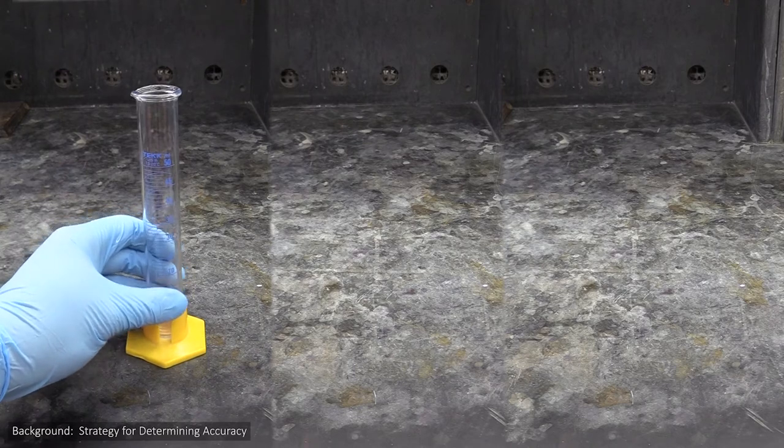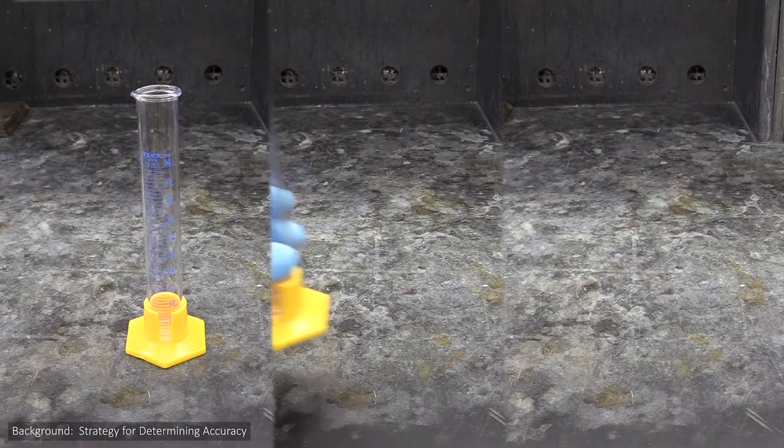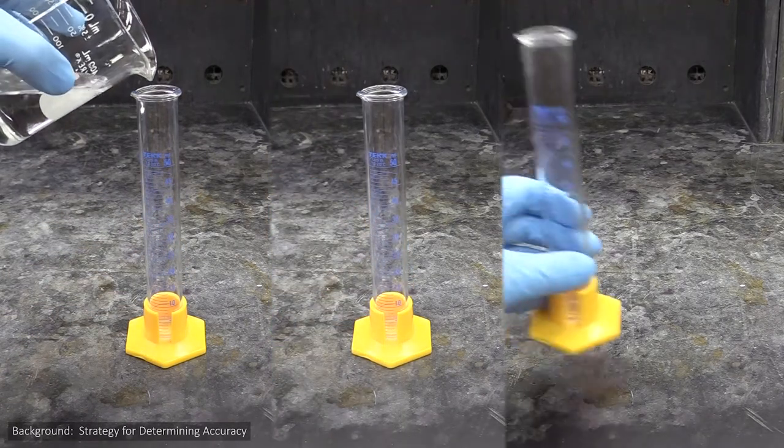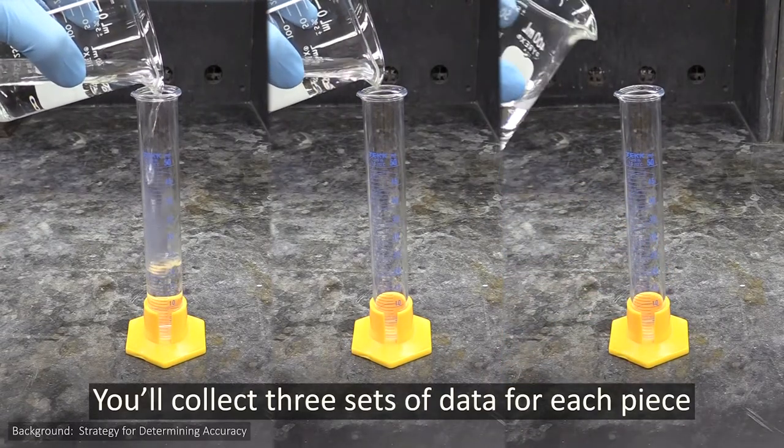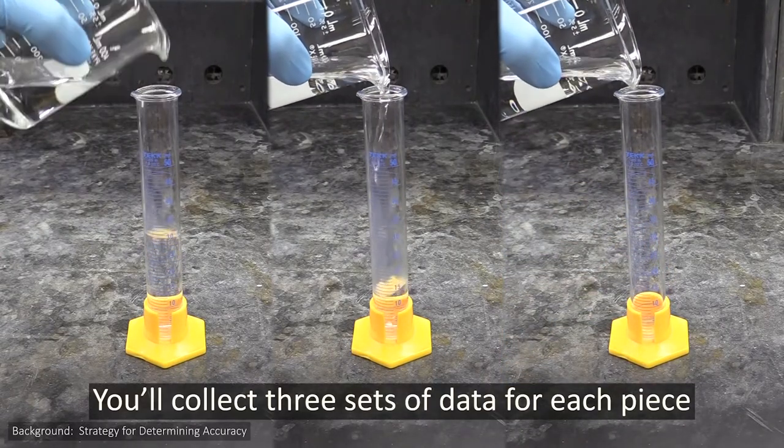Of course, no real science experiment relies on just one data point, so you will take not one, but three sets of read and actual measurements with each piece, and compare the average read measurement to the average actual measurement.